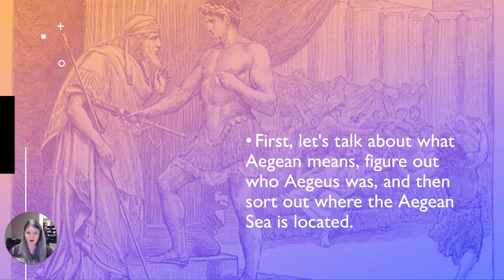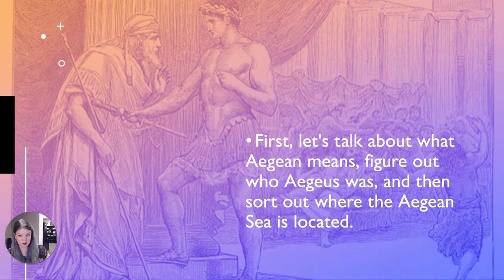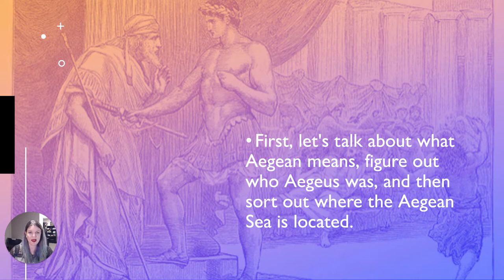Aegeus literally means 'goat man,' but that is not why he is a known person. A lot of what we know about some of these figures comes from myth, which we think was maybe based on actual people and events, with some misinterpretations along the way. According to myth, Aegeus was the king of Athens, which exists on what is now the Greek mainland. His story is very sad.